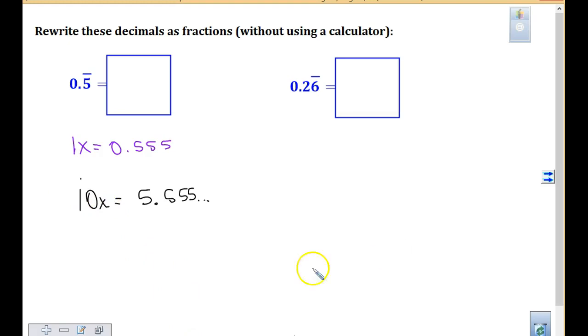What do you got, Abigail? Subtract 1x. 10x minus 1x, oh I like that. That's 9x. What was 1x equal to, Abigail? Your 0.5 repeating. And I line those up, and I do the subtraction, and I get 5, because all of those are canceled, right?